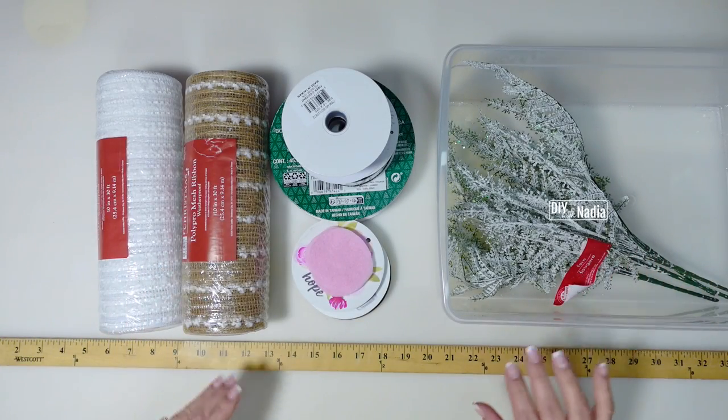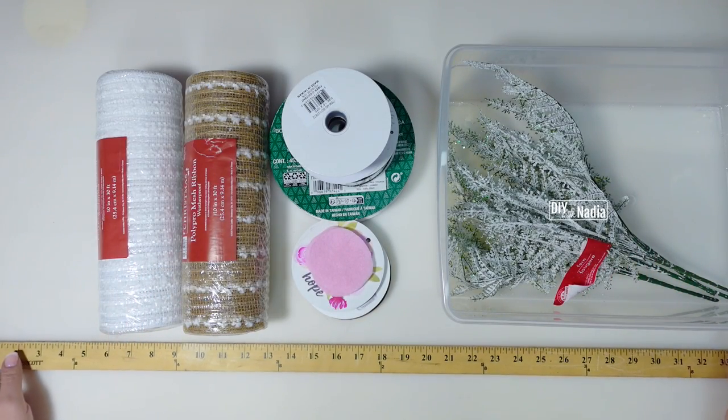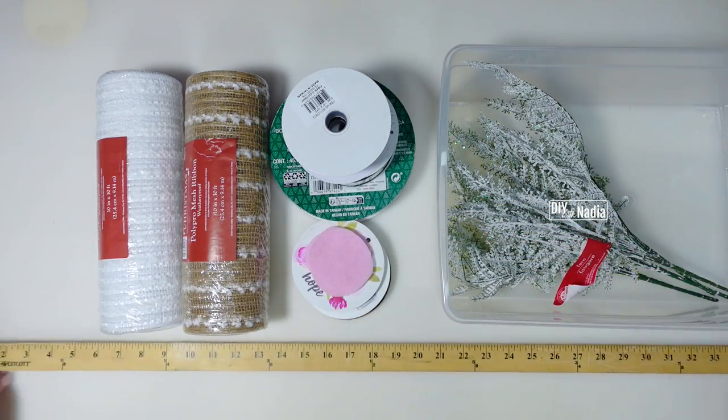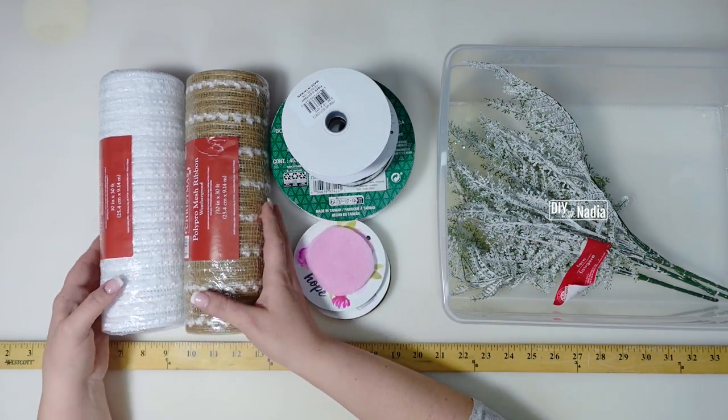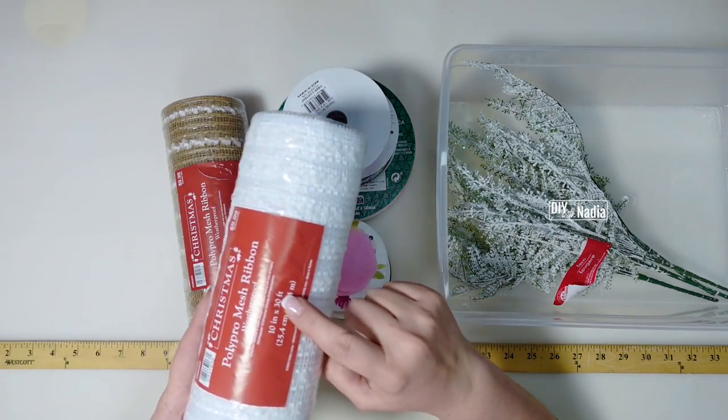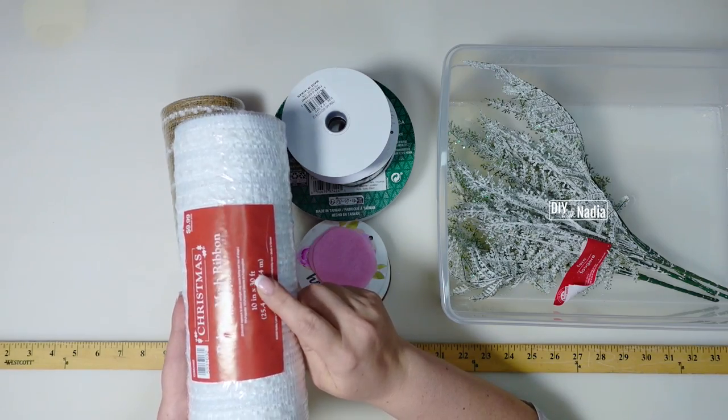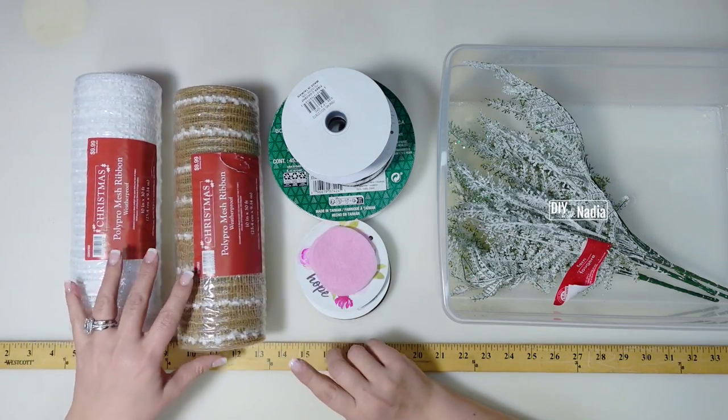Here are the supplies we're going to need for the centerpiece or swag, whatever you are making. Here is a yardstick, two rolls of 10 inch deco mesh. Make sure it's 30 feet or 10 yards. Always look to make sure that it's 30 feet, not 18 feet.